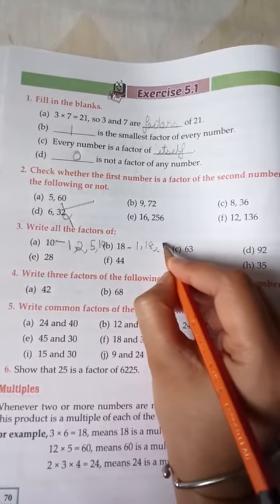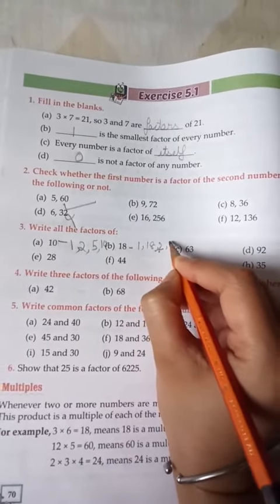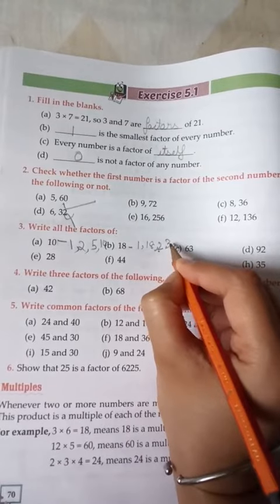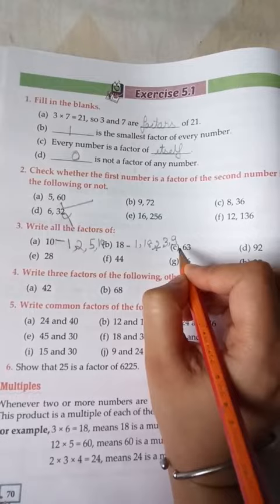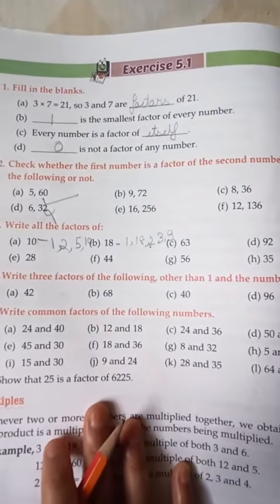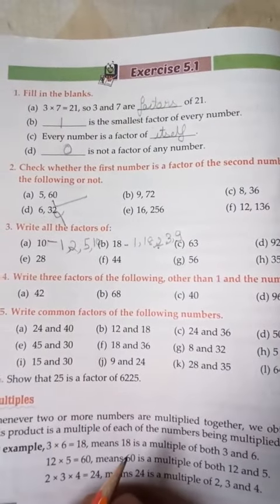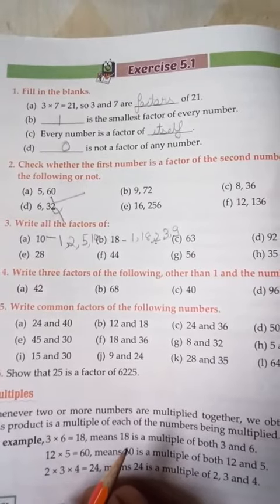Now I will solve question number 18. 1 is the factor of every number. 18 is also the factor of 18. It will come in the 2 table also. 3 also, and 9 also. Understood? So these are the factors of 18.